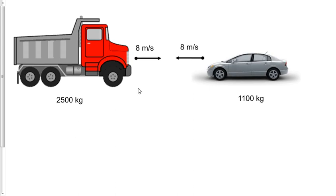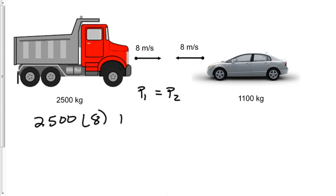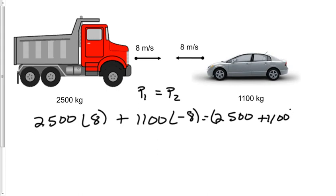Let's do the regular inelastic collision. We know the umbrella equation: momentum before the collision must equal momentum after, so momentum 1 must equal momentum 2. Since we're doing an inelastic collision: 2,500 multiplied by 8 plus 1,100 multiplied by negative 8 equals the combined mass — 2,500 plus 1,100 — multiplied by the unknown final velocity. Solving the equation, the velocity is 3.1 meters per second. The car and the truck are both together, so that's the velocity of both of them.